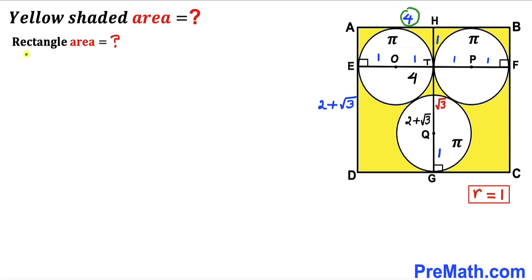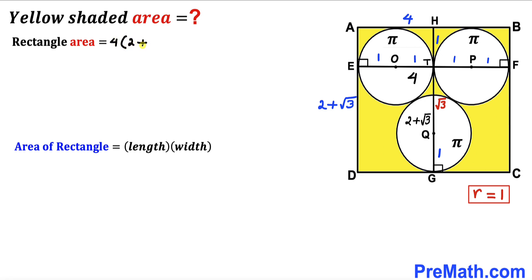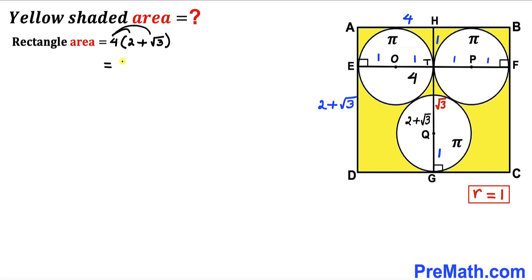Now we calculate the area of rectangle ABCD. Recalling the formula: Area = length × width. Our length is 4 and width is 2 + √3, so the rectangle area = 4 × (2 + √3). Distributing gives 8 + 4√3.